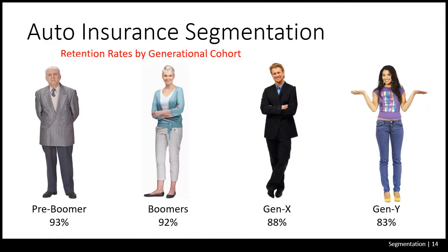Continuing with our auto insurance segmentation example, let's look at retention rates by different generational cohorts. Pre-boomers and boomers are very loyal to their existing insurance agents and companies, primarily because they don't like to change. For example, I'm a member of USAA — geared toward people who were in the military or had parents in the military, as in my case. I'd been with them for probably 30 years and always had my insurance with them.